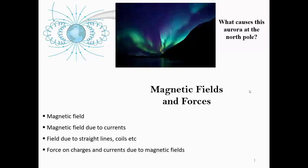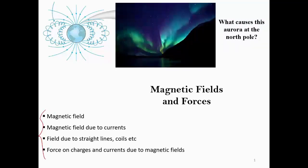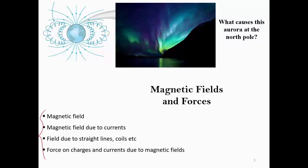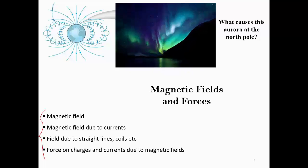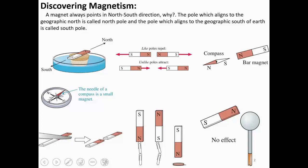Here's the next topic on electromagnetism: magnetic fields and magnetic forces. On this slide, we're going to first define magnetic field, just like electric field. Then we'll cover magnetic field due to currents — our main topic — magnetic field due to straight lines, coils, and finally force on charges and conductors due to magnetic fields. After this topic, you should be able to answer what causes the northern lights, the Aurora.